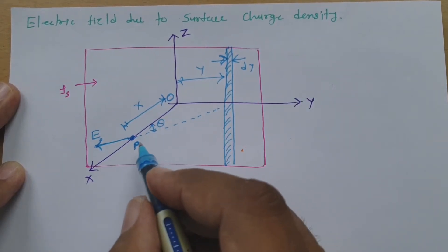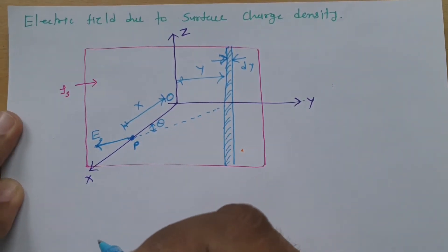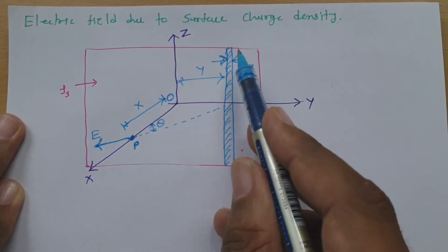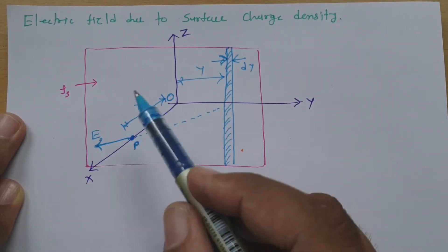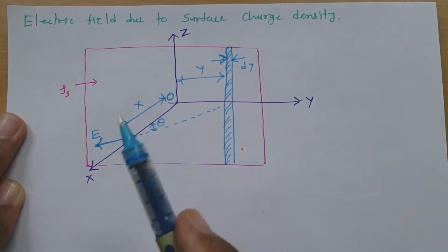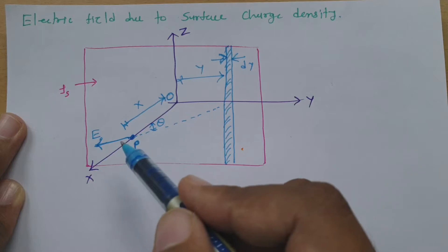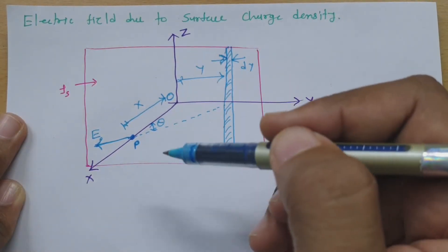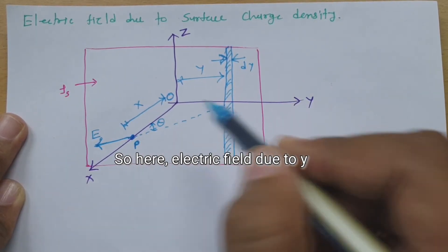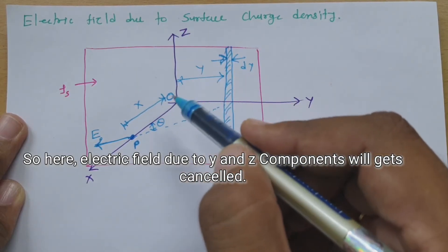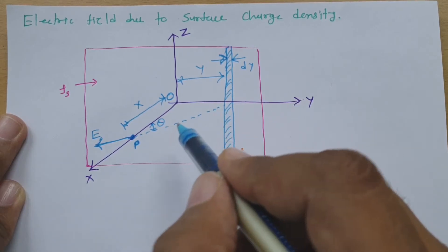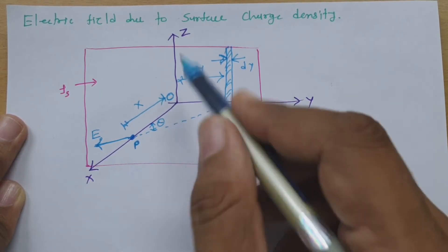Our agenda is to calculate the electric field at this point. If you observe the electric field due to this strip, it is in one direction, and the opposite side strip produces a field in the opposite direction. So the Y components cancel each other. Similarly, the Z components of the electric field also cancel. Therefore, for this surface charge on the YZ plane, there is no Y component and no Z component of the electric field.